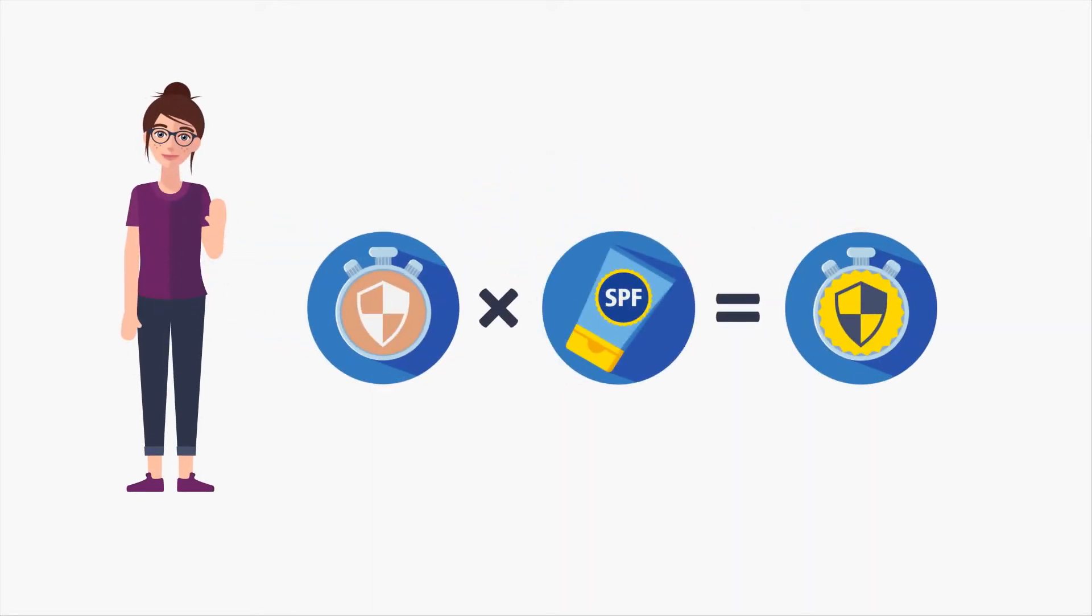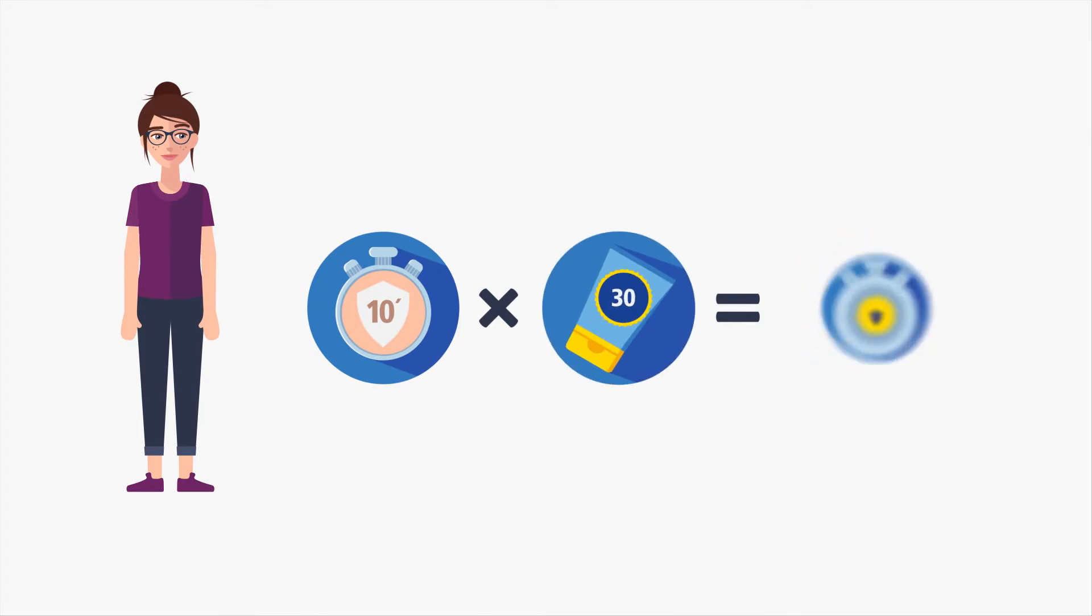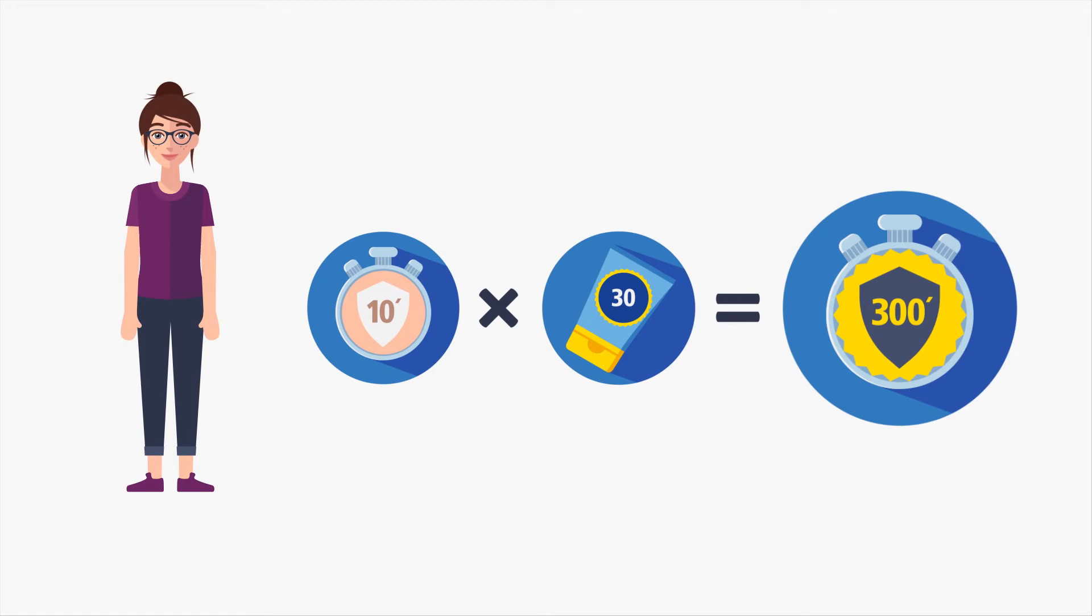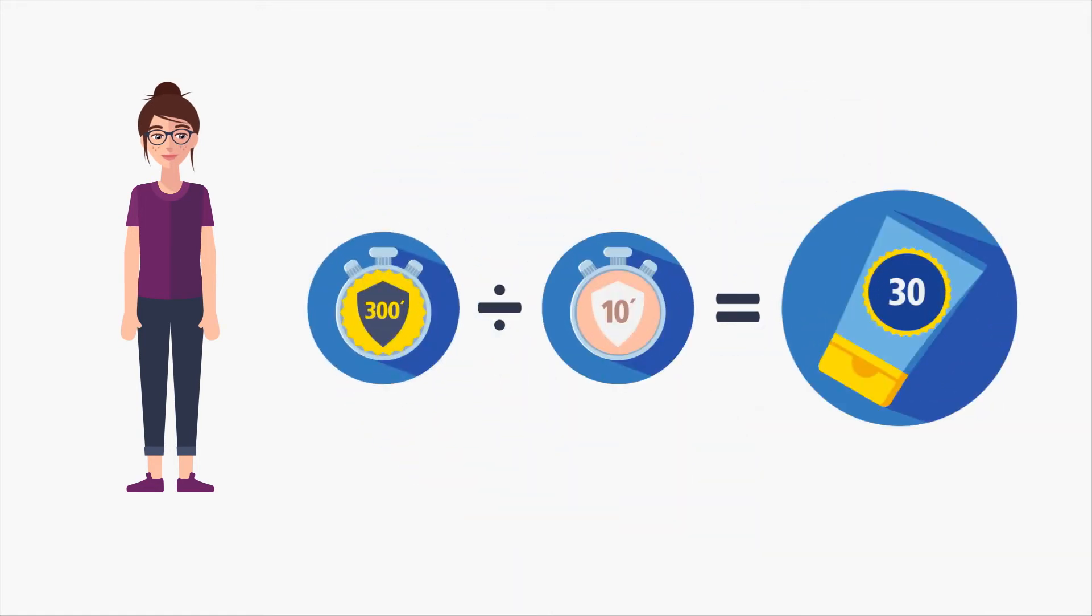And here is how SPF works. Emma has a self-protection time of 10 minutes. Using a sunscreen with an SPF of 30, she can stay in the sun for 300 minutes or 5 hours. Or vice versa, if you want to know what SPF you need to stay in the sun for a certain amount of time.